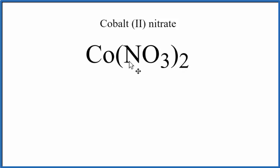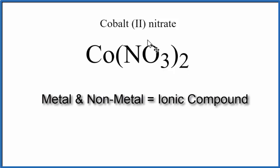Cobalt, that's a metal, and then nitrogen and oxygen, those are non-metals. In fact, they're a group of non-metals tightly bonded together in what we call a polyatomic ion. We have two of these NO3 ions, called the nitrate ion.